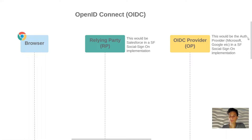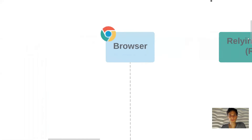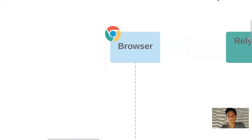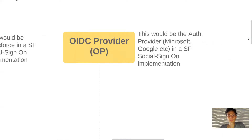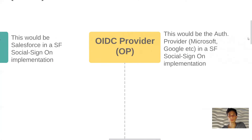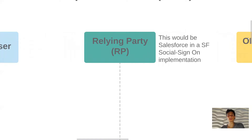Running through the flow for OpenID Connect, there are three system actors involved: the user's browser (or mobile app), the relying party - the system that the user wants to access a resource from (if we're setting up Salesforce as a relying party, this would represent Salesforce in a social sign-on implementation), and finally the OpenID Connect provider - the system which is assessing and confirming the identity of the user, such as Microsoft or Google in a social sign-on situation.